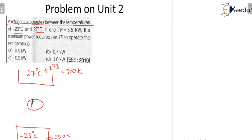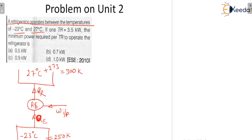In between the refrigeration system, there is your work input, your Q extracted, and your Q rejected — this is the refrigeration cycle. If one ton of refrigeration (TR) equals 3.5 kilowatt, then 3.5 kilowatt is the refrigeration effect, and we need to find the minimum power required per TR.